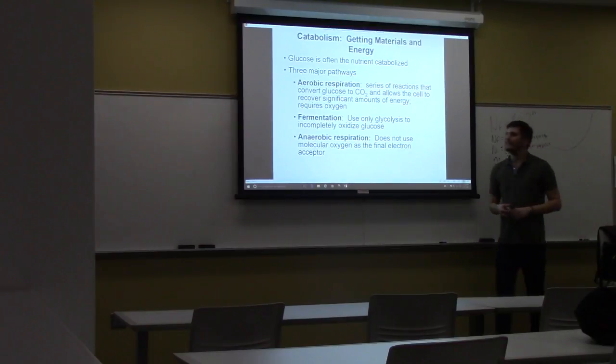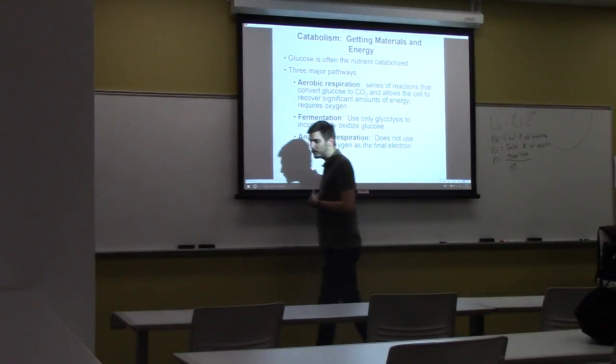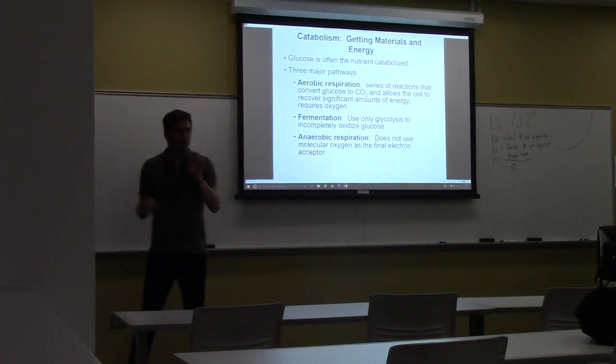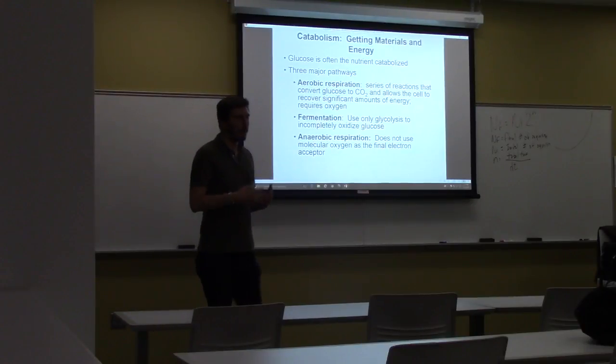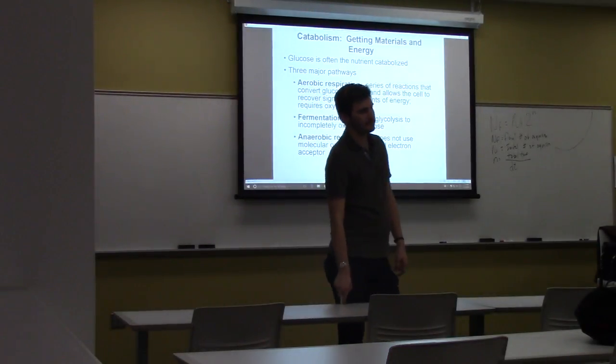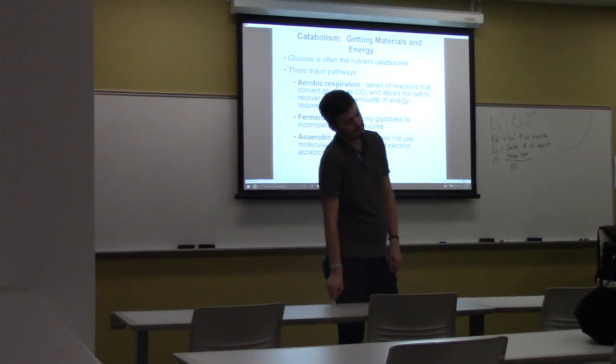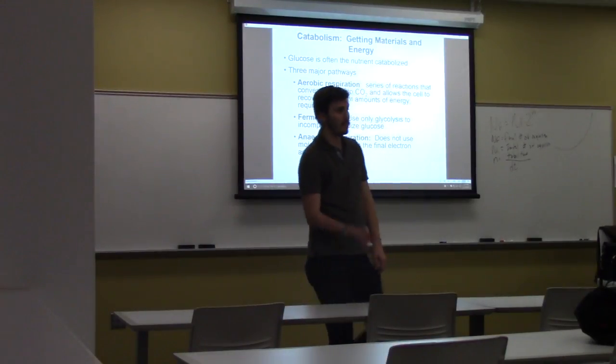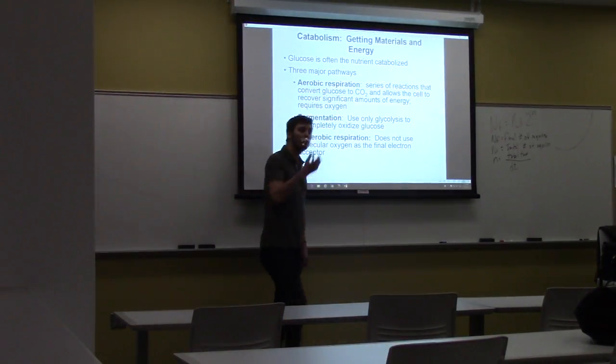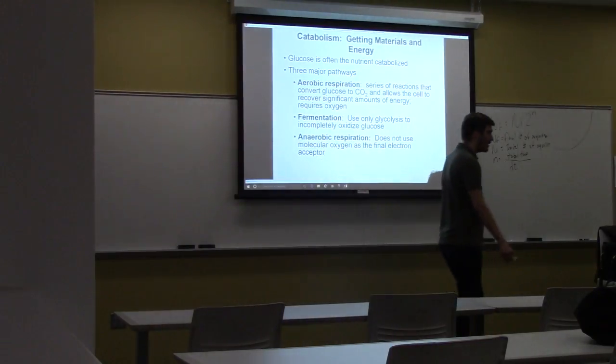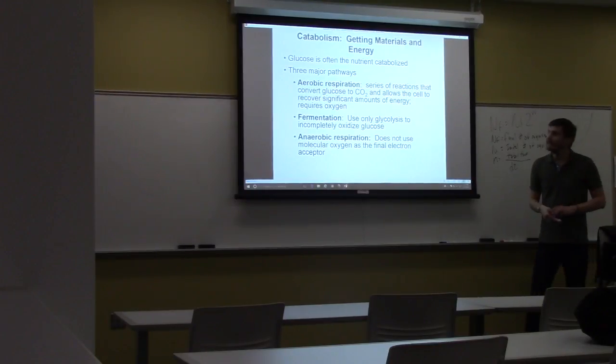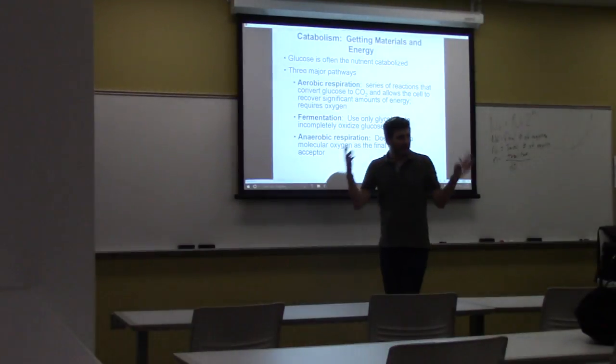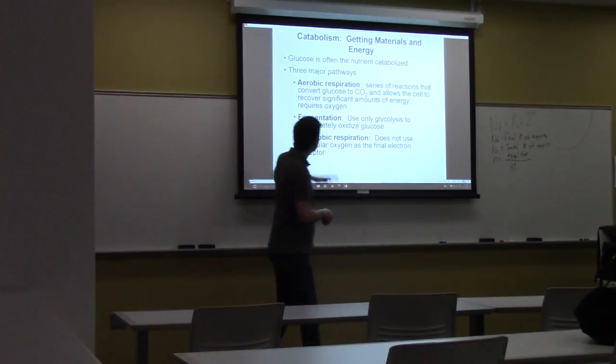On to the pathways. Now, when we talk about catabolism or the production of ATP, we usually talk about one molecule when we're trying to separate out organisms, and that is oxygen. Why do we care so much about oxygen? Now, if you use normal oxygen or atmospheric oxygen, O2, you're called aerobic. How efficient are these guys at making ATP? Very. They make the most, right?